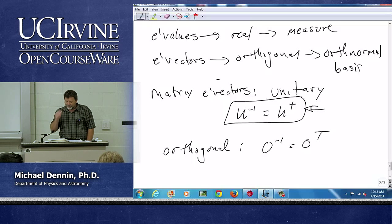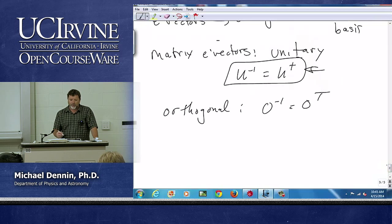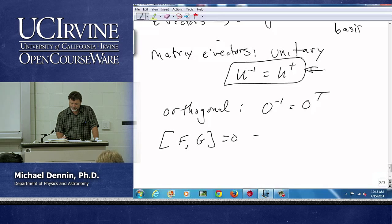And the final piece I already mentioned that we want to know for quantum mechanics is if we have two matrices that commute, then we can diagonalize them